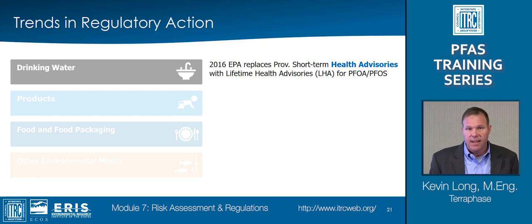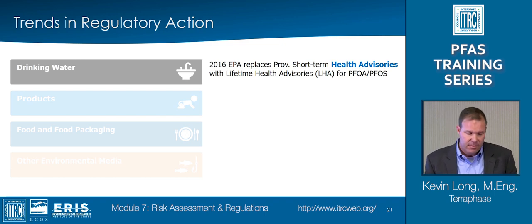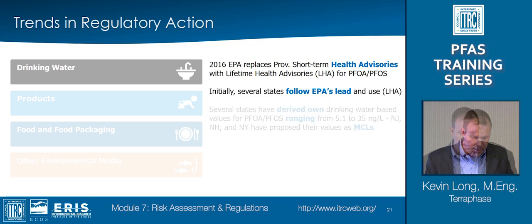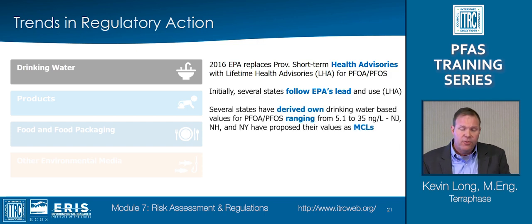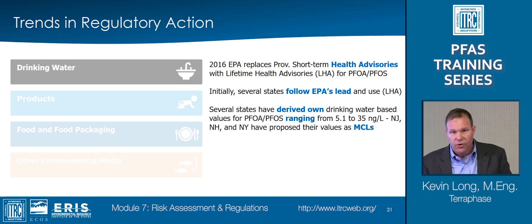In 2009, EPA established provisional short-term drinking water health advisories for PFOA and PFOS. In 2016, they replaced the short-term health advisories with lifetime health advisories. Initially several states followed EPA's lead, and several still today utilize EPA's health advisories for decision-making purposes. However, as of November 2019, several states had derived their own risk-based values for PFOA and/or PFOS, resulting in a variety of concentrations ranging from 5.1 ng/L to 35 ng/L, with New Jersey, New York, and New Hampshire proposing their values as maximum contaminant levels.